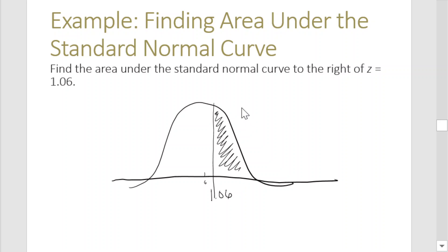To get this, you need 1 minus the area you get from the table. Because with the table, for to the left, you just look it up directly. But for to the right, you need to use 1 minus to get the other side.